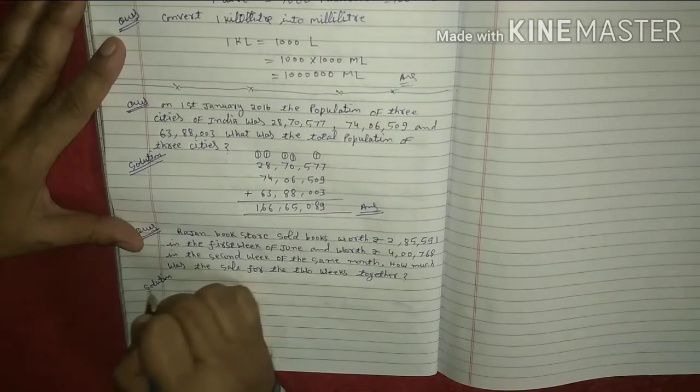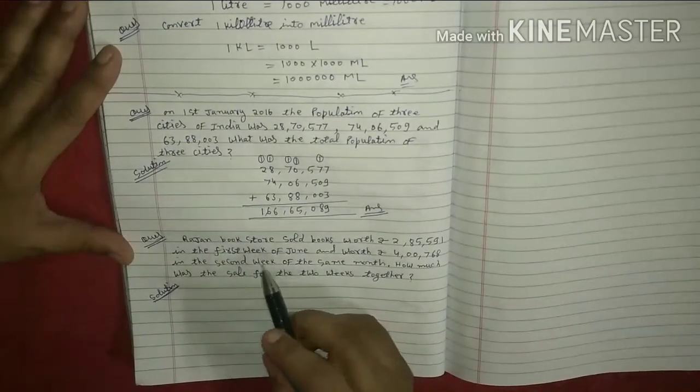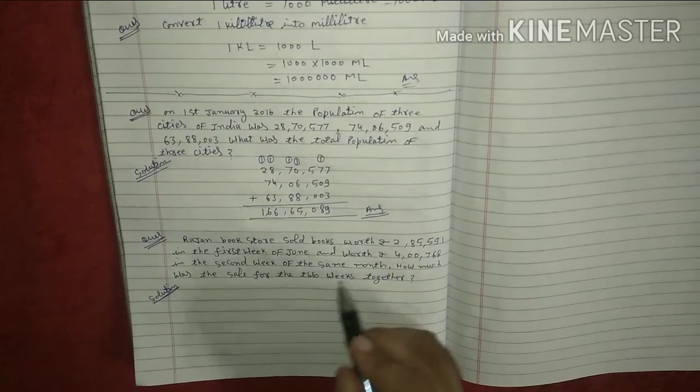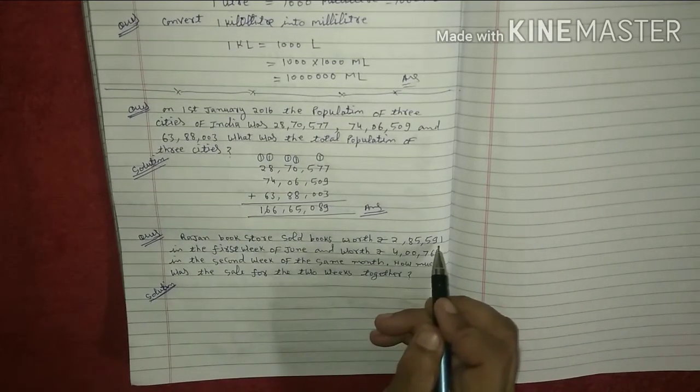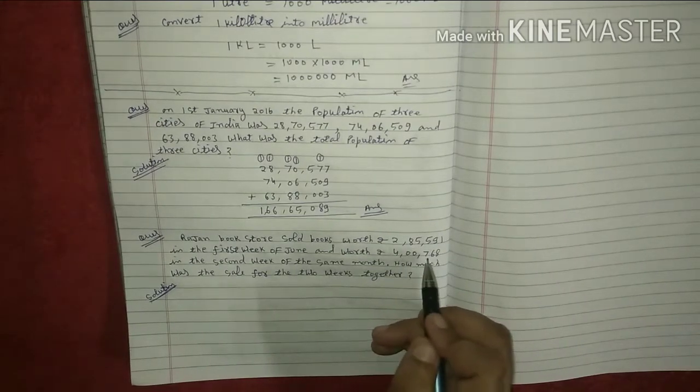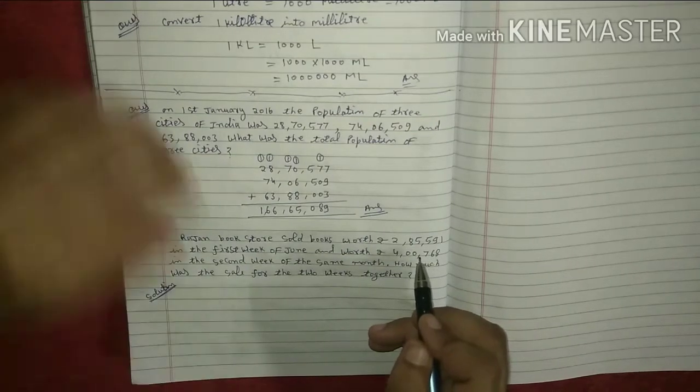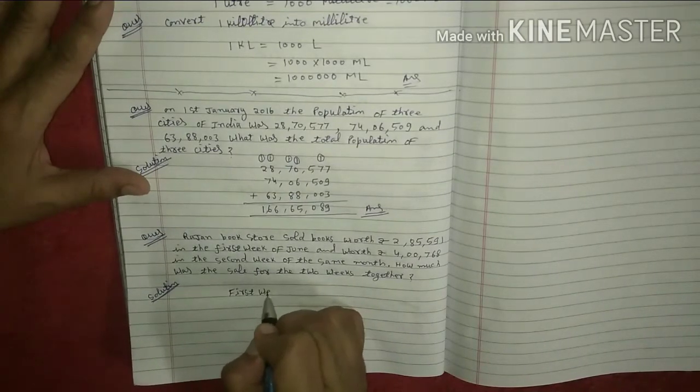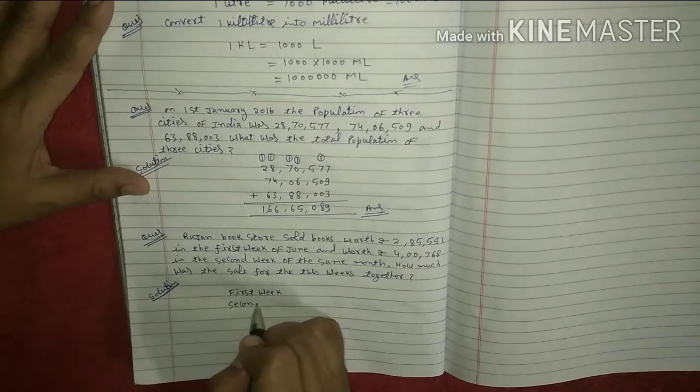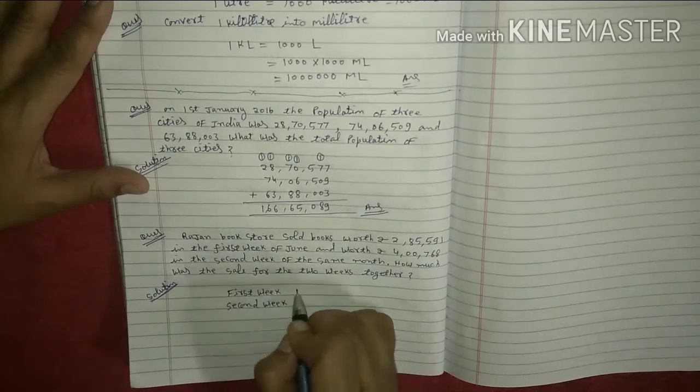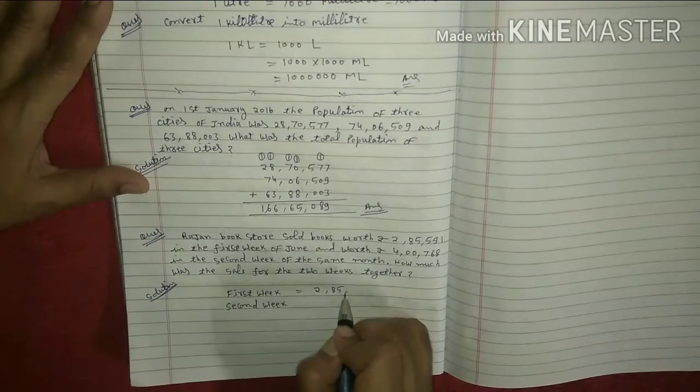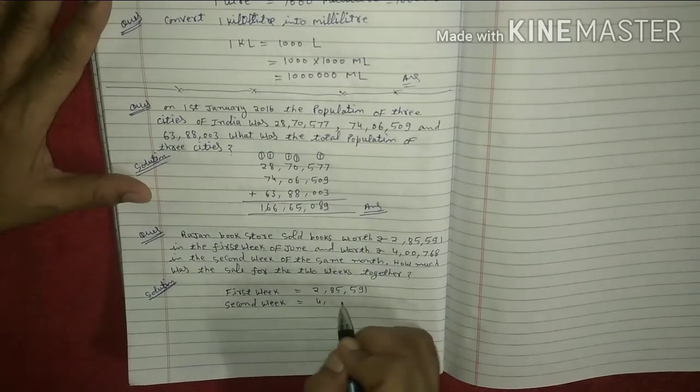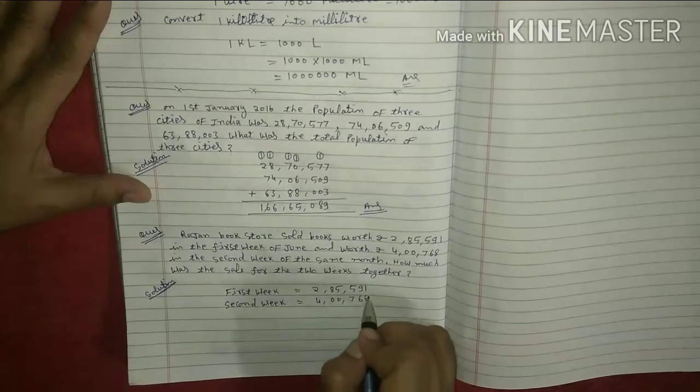Solution. First of all, you have to find the total sale in two weeks of June. In first week, 2,85,591. And second week, 4,768. You have to add both terms. First week, 2,85,591. In the second week, 4,768.